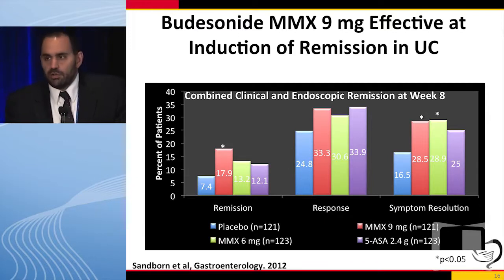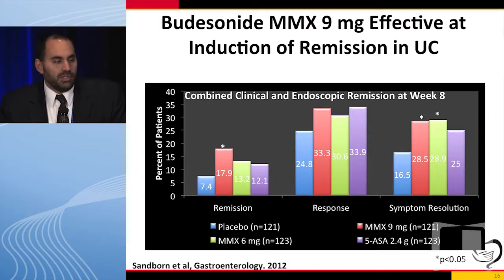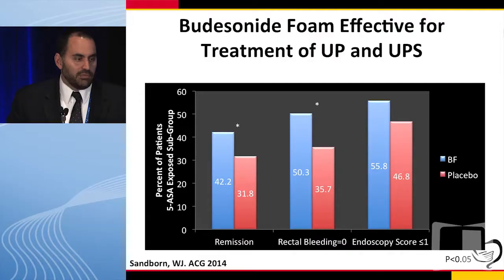Transitioning to steroids, we'll start with the less toxic steroid, budesonide. This is looking at the new MMX budesonide — Uceris — for induction of remission in UC. This is the CORE-1 study, looking at various doses of budesonide compared to 5-ASA and placebo. Looking at remission on the far left, response in the center, and symptom resolution on the right, 9 milligrams of Uceris is more effective at inducing remission compared to placebo. Either 9 or 6 milligrams was more effective in symptom resolution. So this product is effective for induction of remission.